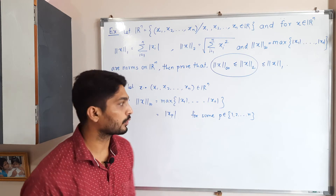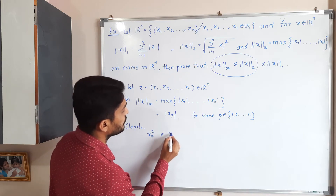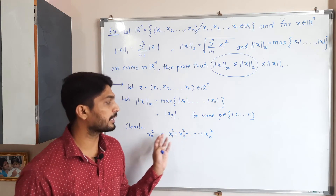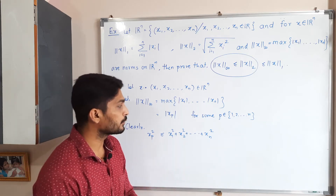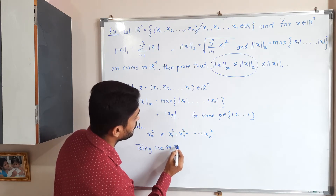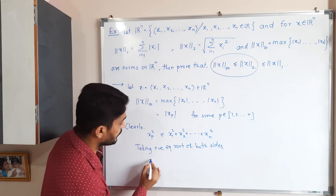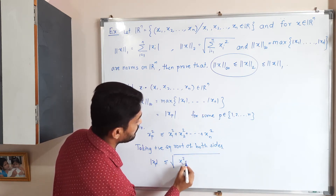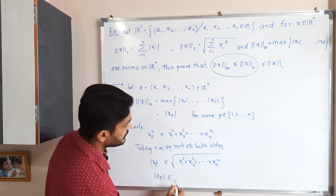Clearly, if you consider |x_p|², this is less than or equal to x₁² + x₂² + ... + xₙ², because x_p is included in the sum and we are adding all entries, so it is less than or equal to the sum of all elements. Now I'm going to take the positive square root of both sides. Taking the positive square root, |x_p| is less than or equal to √(x₁² + x₂² + ... + xₙ²).